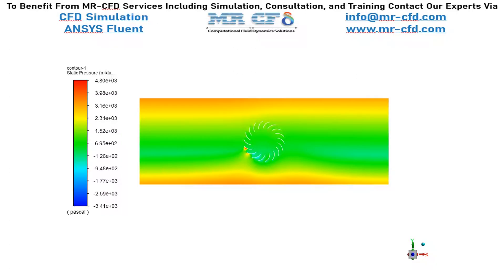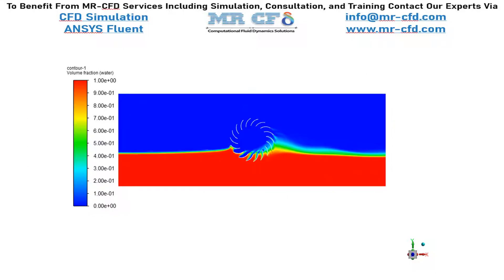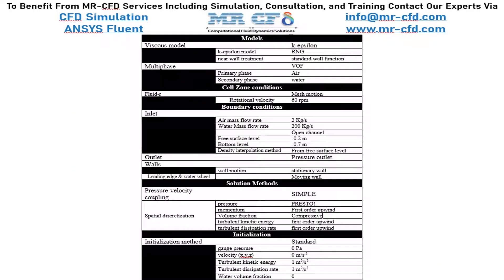In the pressure contour you can clearly see the increased pressure on the tip of the blades where the water flow touches the turbine. In this contour you can see how the turbine has rotated and observe the interface between the two phases of air and water. Finally, the summary of settings used in this project is presented in the slide.